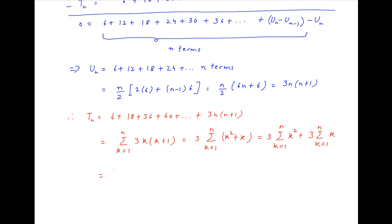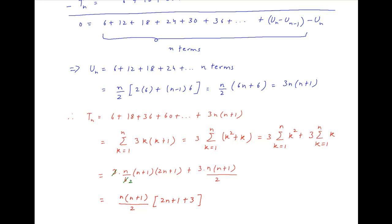Substituting the standard results for summation k squared and summation k, we get Tn is equal to 3 times n upon 6 times n plus 1 times 2n plus 1, plus 3 times n times n plus 1 upon 2. And this is equal to n times n plus 1 upon 2 multiplied by (2n plus 1 plus 3), which is equal to n times n plus 1 times 2n plus 4 upon 2, which simplifies to n times n plus 1 times n plus 2.